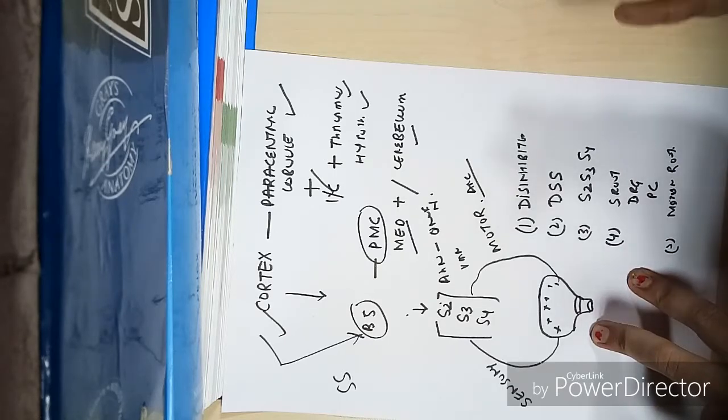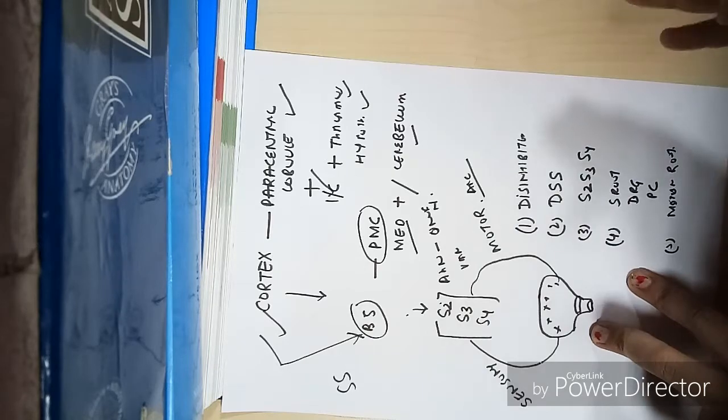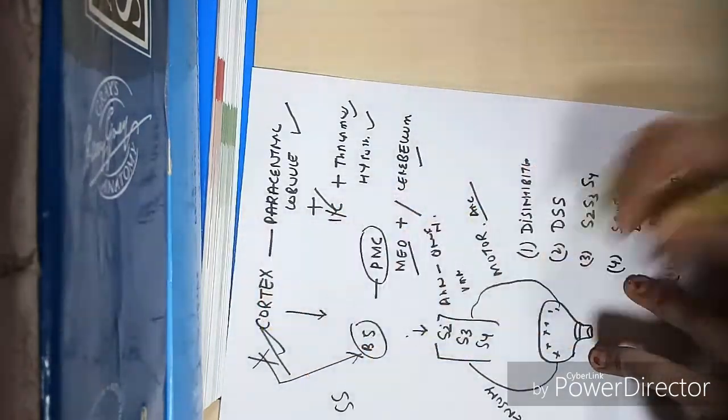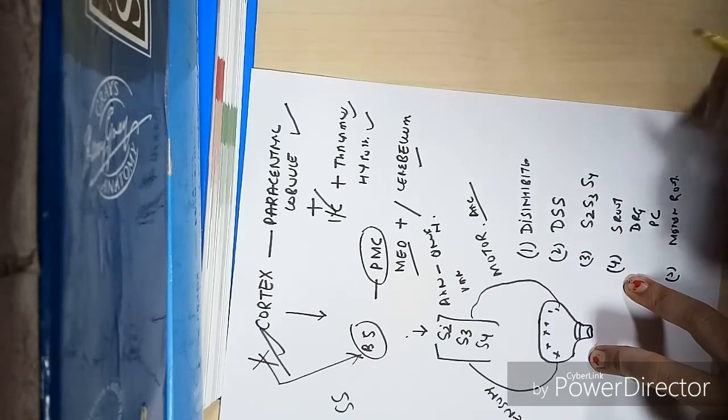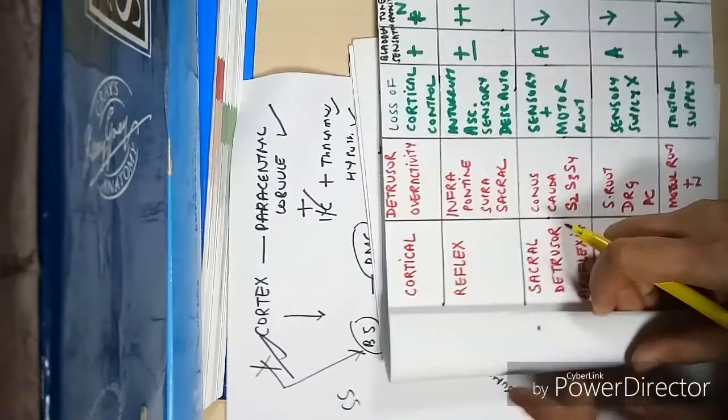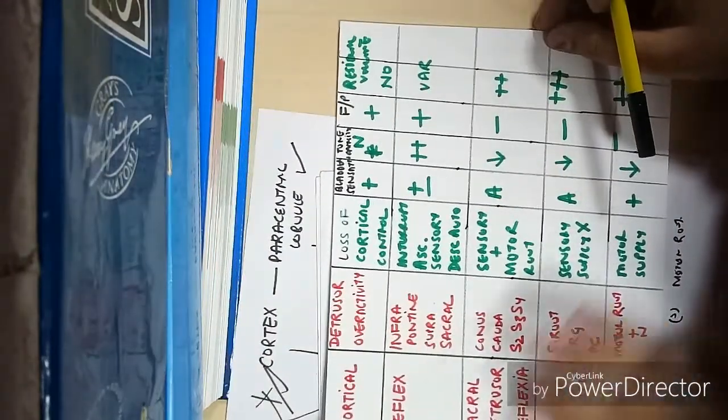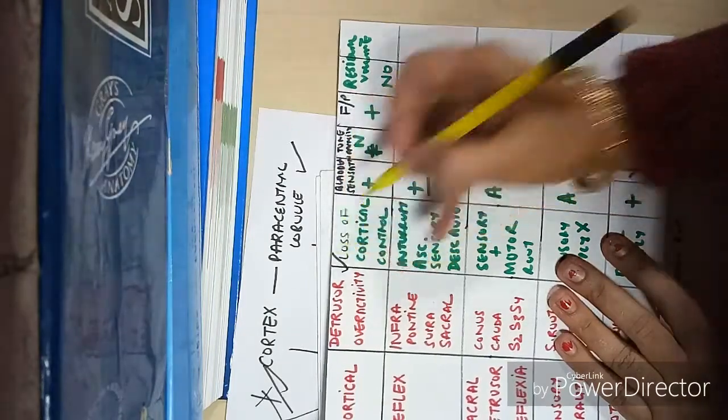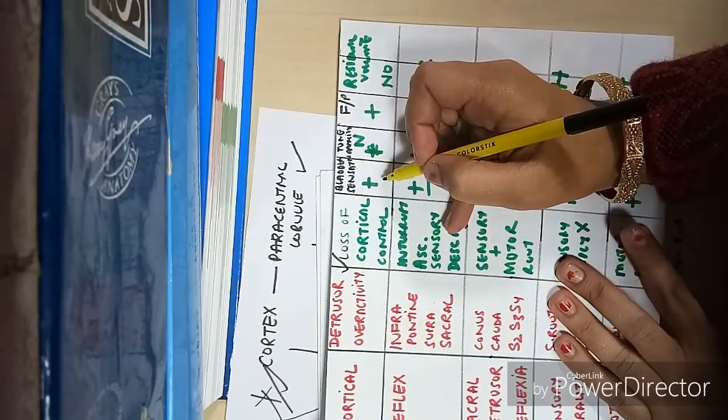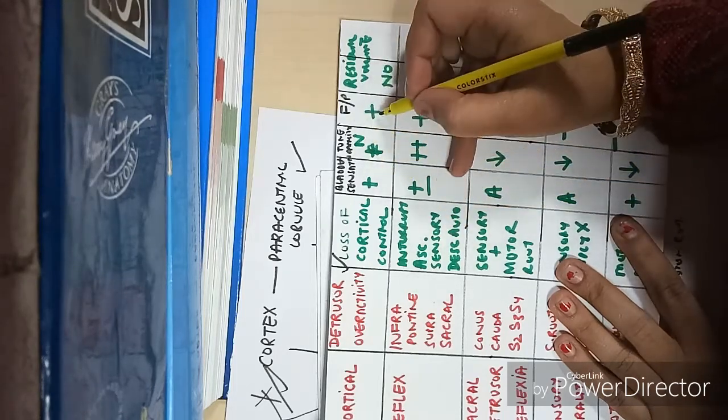First, if the lesion is at the cortical level, it causes a disinhibited bladder. There is loss of cortical control, but the patient will have bladder sensation and normal bladder tone. Frequency and precipitancy can be present, and there is no residual urine. Remember, any lesion between the cortex and above S2 will have no residual volume.